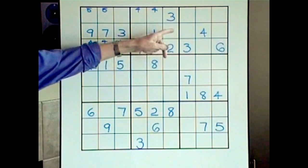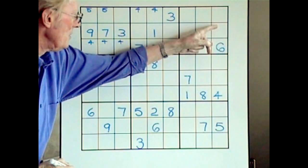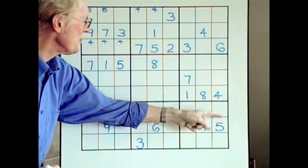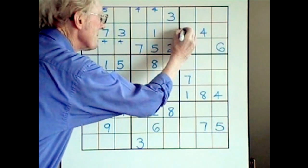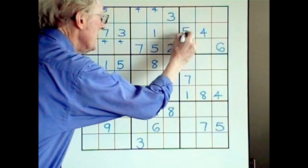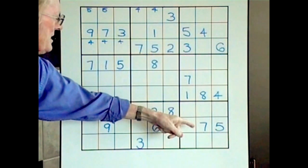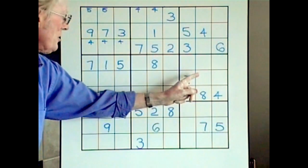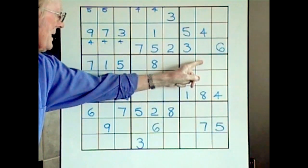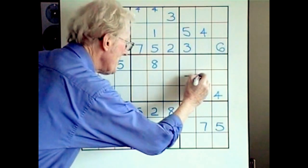If that's the case, we have a top, a bottom, and a middle over here. If there's a middle over here, we look down here and there's a five, so it can't be there — it has to be there. Now is there a ramification of that five? Yes — when I look down, we have a left, a right; it could be in the center here or here, but it can't be there because of this five.